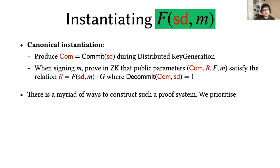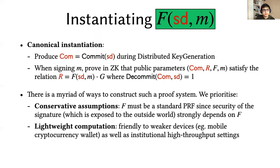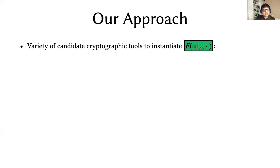There's a myriad of ways to construct such a proof system. In order to make our choice of tools clearer, we lay down our priorities for the setting. Firstly, we want to focus on conservative choice of the pseudorandom function because the signatures which are exposed to the outside world strongly depend on the security of the PRF. Next, we would like lightweight computation, so we could actually retain friendliness to weaker devices such as mobile cryptocurrency wallets, and this could be useful in high-throughput settings. Finally, we want round efficiency to match that of regular threshold Schnorr. That's three rounds. We don't want to increase the latency.